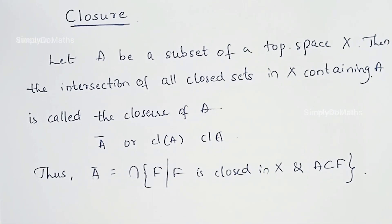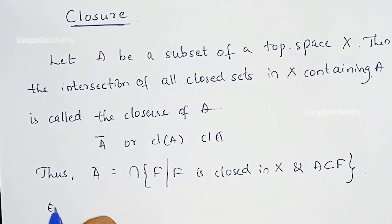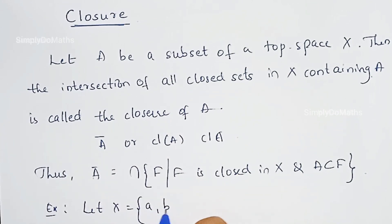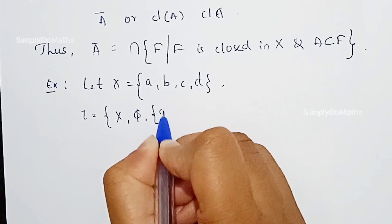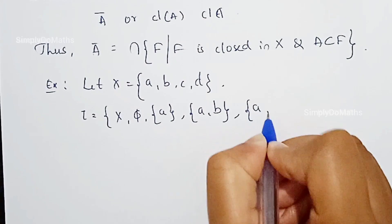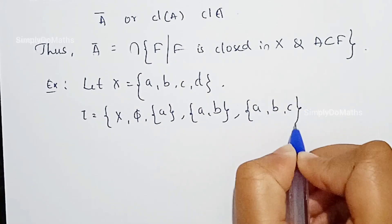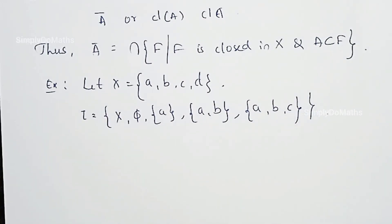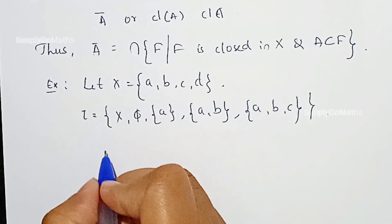Let's consider one example to understand the definition of closure. Let X = {A, B, C, D}. Let's define a topology τ which contains: X, empty set, {A}, {A, B}, and {A, B, C}. Now let's check whether this is a topology or not.